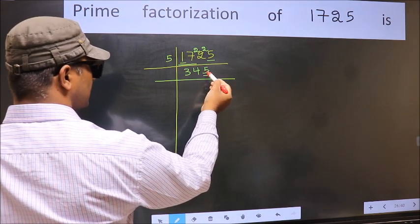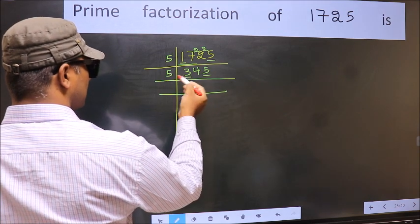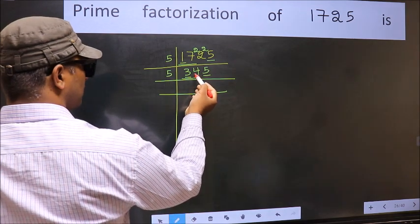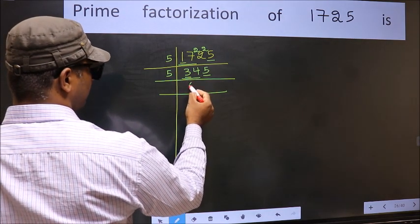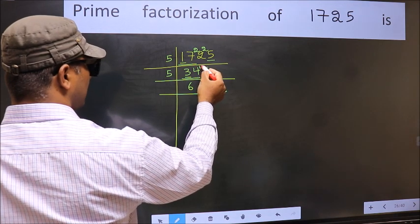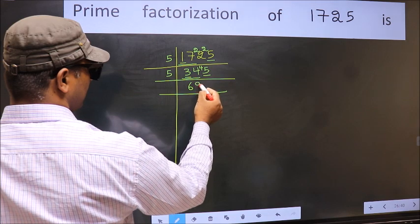Now the last digit 5, so take 5. First number 3 smaller than 5, so take 2 numbers 34. A number close to 34 in 5 table is 5, 6, 30. 34 minus 34, 4 carried forward 45. When do we get 45 in 5 table? 5, 9 is 45.